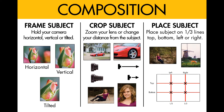Our composition card illustrates three creative choices: how to frame, crop and place your subject. To frame your subject, hold your camera horizontal, vertical or tilted. Here you can see a subject photographed horizontally, vertically and with the camera tilted.